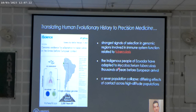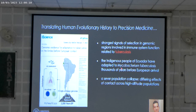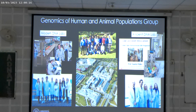And then, translating human evolutionary genetics into precision medicine: in work that just came out last month, we were looking for signals of selection in individuals living at high altitude in Ecuador. Unexpectedly, we found the strongest signals of selection in a genomic region involved in the immune system related to tuberculosis. Combining this information with age estimates, we can say that the indigenous people of Ecuador adapted to Mycobacterium tuberculosis thousands of years before European arrival — in agreement with evidence that some Mycobacterium tuberculosis strains were already present before European contact.